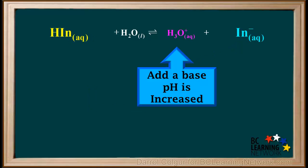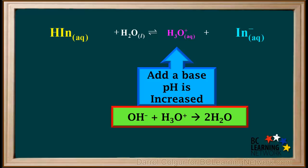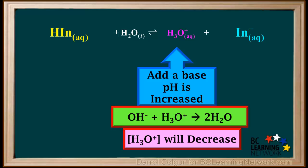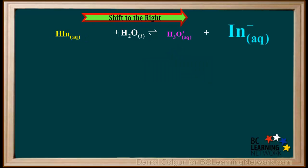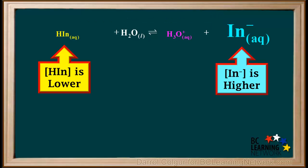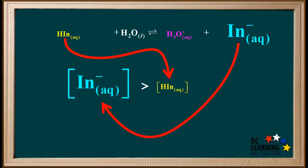Now we'll add a base to our indicator — that's the same as increasing the pH. The OH⁻ from the base will neutralize some of the H₃O⁺, and the concentration of H₃O⁺ will decrease. The decrease in the concentration of hydronium is a stress to the equilibrium, and in order to counteract this stress, it will shift to the right. As a result of adding a base and the consequent shift to the right, the concentration of the acid form HIn is lower than it was originally, and the concentration of the base form In⁻ is higher than it was originally. So when a base is added to an indicator, the concentration of the base form In⁻ becomes greater than that of the acid form HIn.